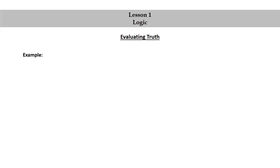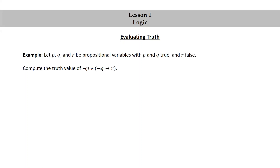Evaluating truth. We will learn to evaluate truth through an example. Let p, q, and r be propositional variables with p and q true and r false. Compute the truth value of not p or not q implies r. We will go over how to solve this several different ways.